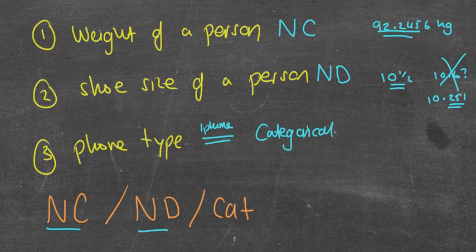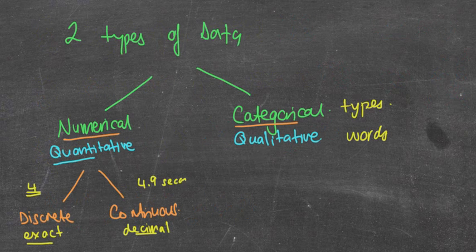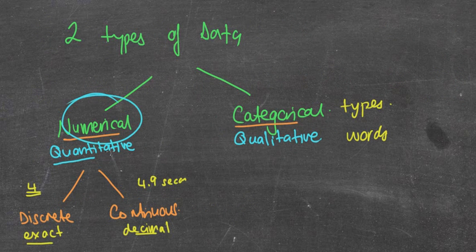That's a type of thing. You might have an iPhone, you might have an Apple, you might have a Samsung, you might have Nokia, different things. And often again, if they're words, they're going to be categorical. So we've basically gone through two types of data: numerical quantitative, so it goes into numerical discrete, numerical continuous, or categorical.